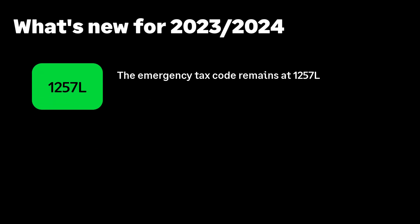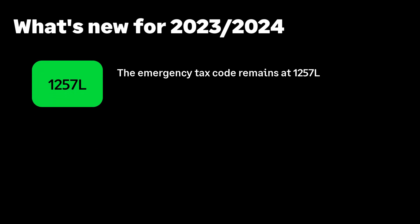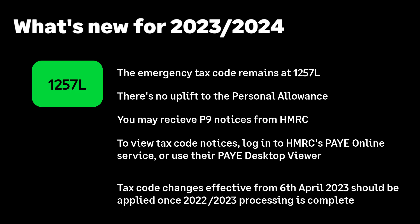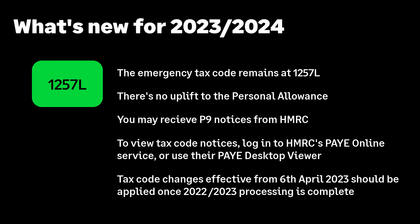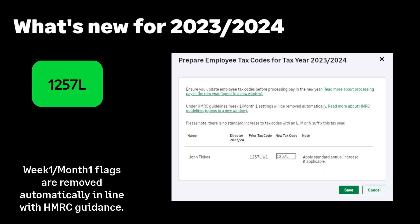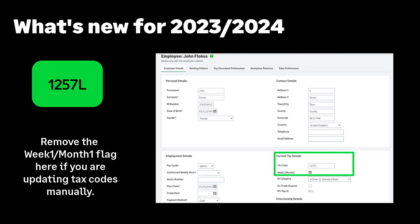We'll now look at some of the changes for the new tax year. The emergency tax code remains at 1257L. Tax code personal allowances remain the same, unless specifically instructed by HMRC. Any tax code notices you receive from HMRC should be updated in Sage Payroll. However, do not update any new tax codes until you have completed your 2022-2023 tax year processing. When you run your first payroll of the tax year, this message will appear and you can amend the tax codes here if required. Alternatively, you can amend the tax code in the employee record.